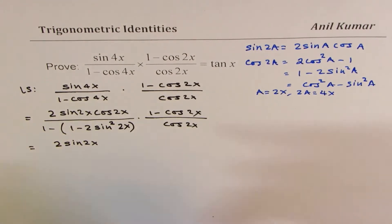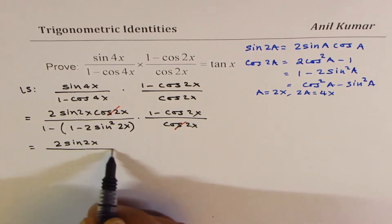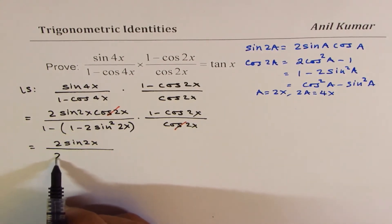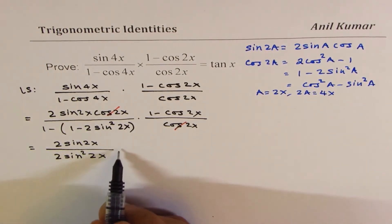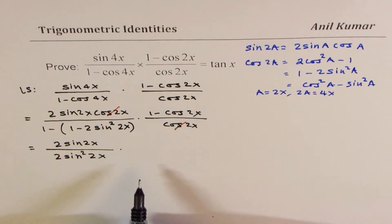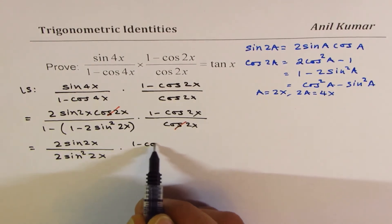So we can simplify this term, cancelling these two for the time being. And what we get here is 2 times sine 2x over 1 minus 1 is 0, and we get 2 sine square 2x. And here we have 1 minus cos 2x.